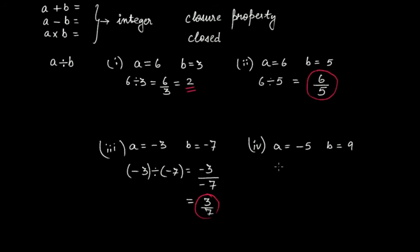For the fourth case, a divided by b gives minus 5 by 9, which is not an integer. So out of these four cases, only the first one follows the closure property — 2 is an integer — but in the second case you have 6 by 5, in the third case 3 by 7, and in the fourth case minus 5 by 9. Therefore, division is not always closed and does not always follow the closure property.